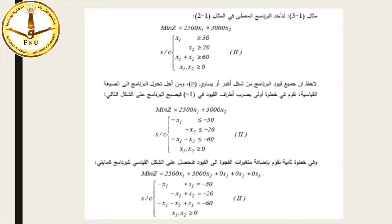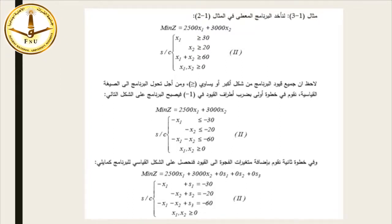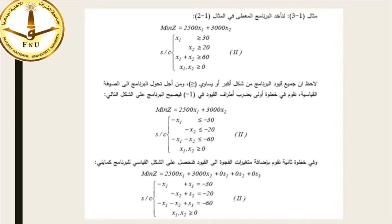مثال: لنأخذ البرنامج الخطي التالي: نُدني Z = 2500X1 + 3000X2 بحيث: X1≤30، X2≤20، X1+X2≤60، وX1,X2≥0. نلاحظ أن جميع قيود البرنامج من شكل أكبر من أو يساوي. ومن أجل تحويل البرنامج إلى الصيغة القياسية نقوم في خطوة أولى بضرب أطراف القيود في سالب واحد، فيصبح: -X1≤-30، -X2≤-20، -X1-X2≤-60.